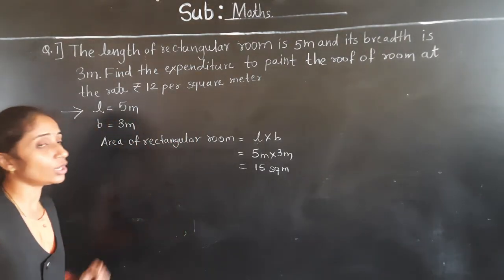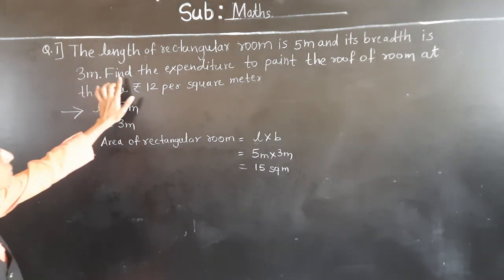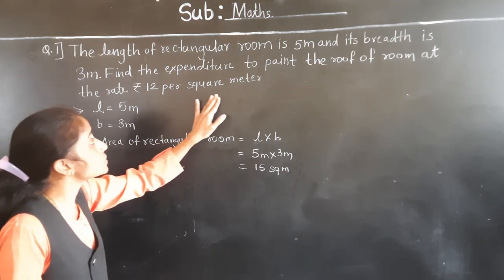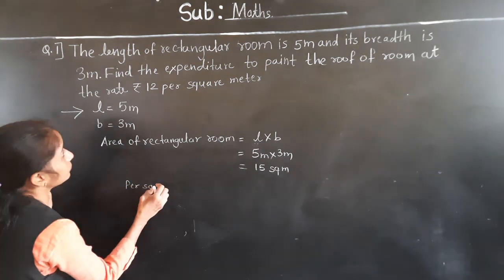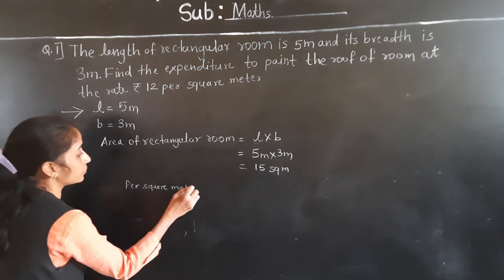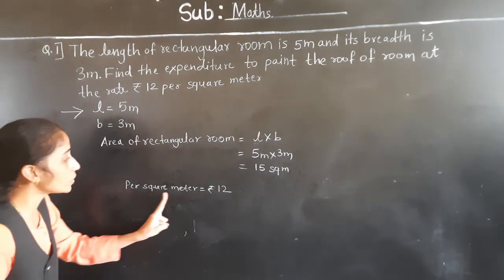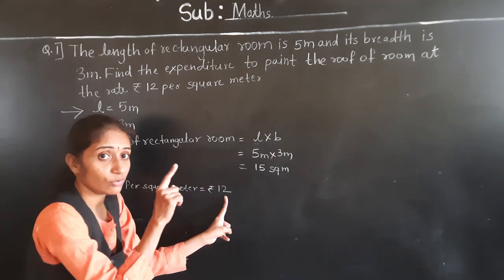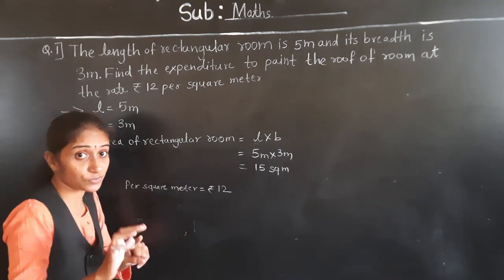Now we got the area of the rectangular room — 15 square meters. What is asked in the question? Find the expenditure to paint the roof of the room at the rate of rupees 12 per square meter. The roof area of the room is 15 square meters.